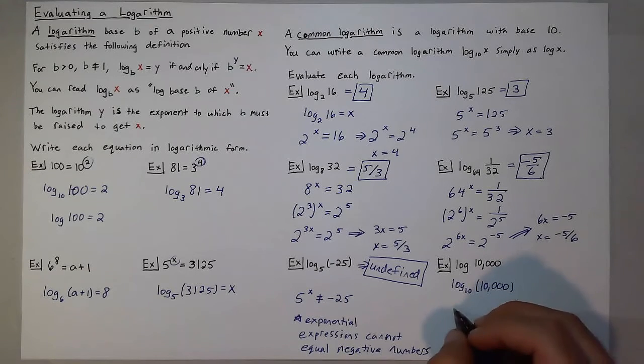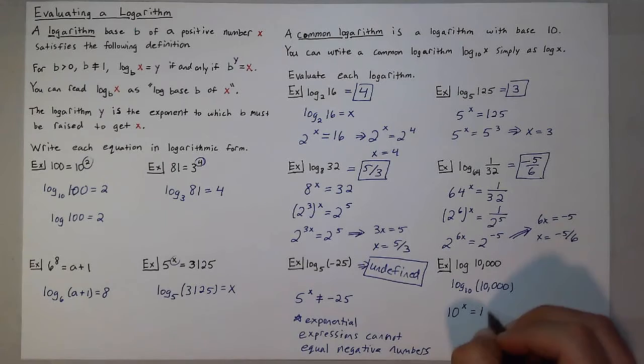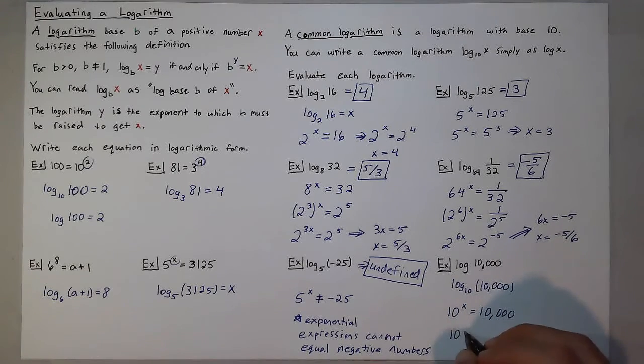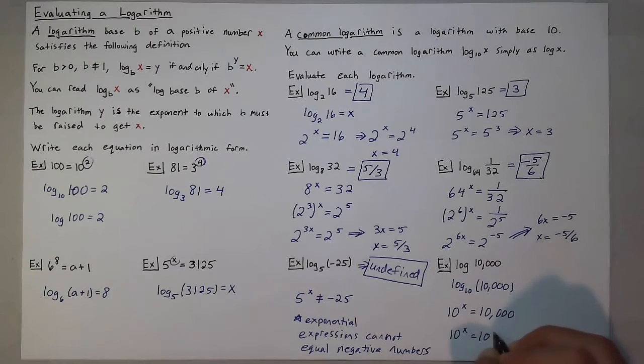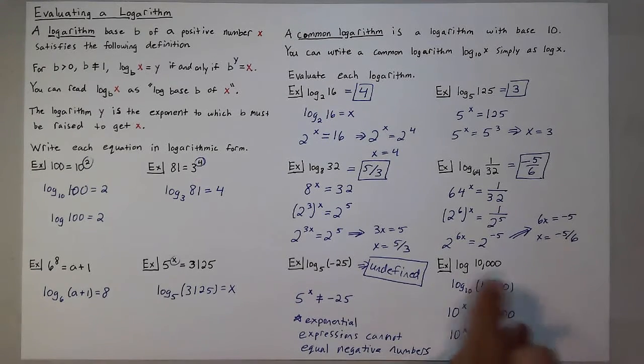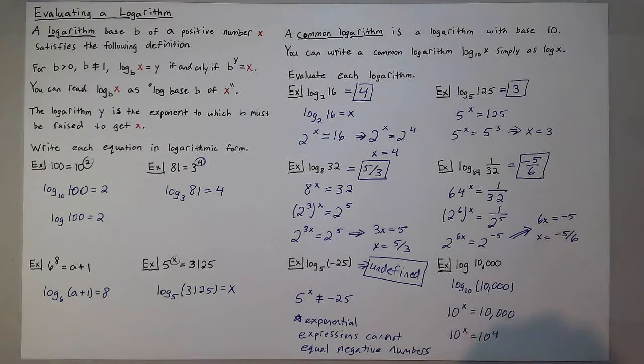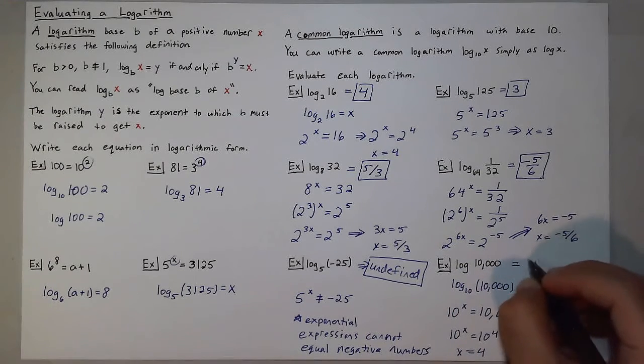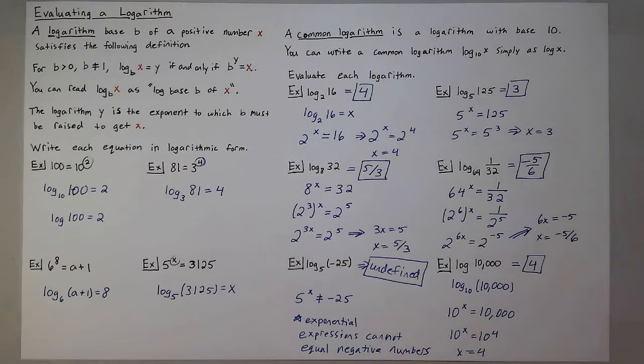So the question becomes, what does 10 have to be raised to to give me 10,000? 10,000 can also be written as 10 to the fourth power, because there are four zeros there. It's a quick way to know which power of 10 you're dealing with, which means that x is equal to 4. So 4 is the power you raise 10 to to get 10,000. So log of 10,000 is equal to 4. And that is how you evaluate a logarithm.